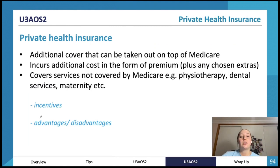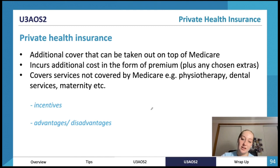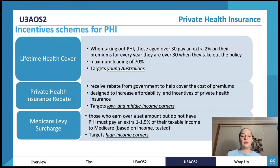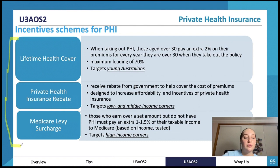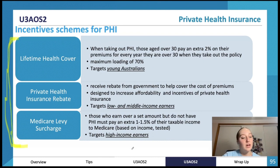Private health insurance is an additional cover people can take out on top of Medicare. They can choose their level of premiums and it covers services not covered by Medicare, such as physio, dental, and maternity. The government uses incentives to encourage more Australians to take out private health insurance — including the lifetime health cover, private health insurance rebate, and Medicare levy surcharge — because this helps take the pressure off the Medicare public health system.